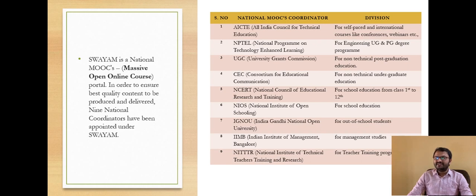The fourth coordinator is CEC — the Consortium for Educational Communication — which offers courses for non-technical undergraduate students. The fifth one is NCERT — the National Council of Education Research and Training — which offers courses for students from Class 1st to 12th. The sixth one is NIOS — the National Institute of Open Schooling — which offers courses for special school education.